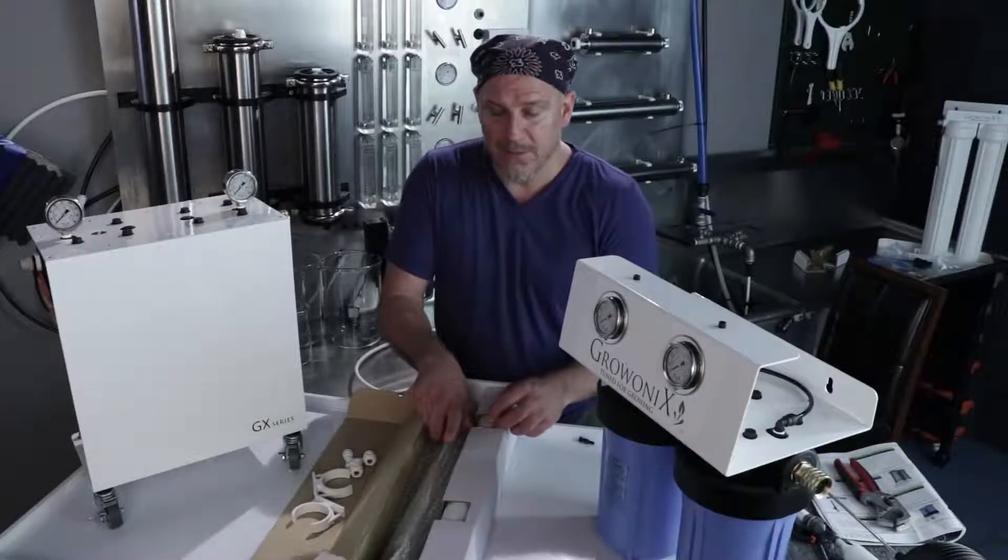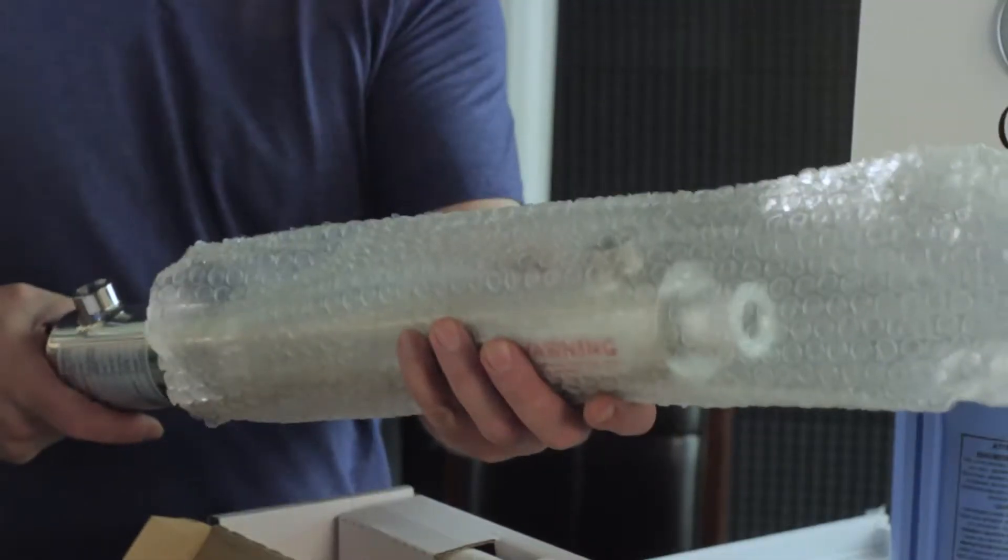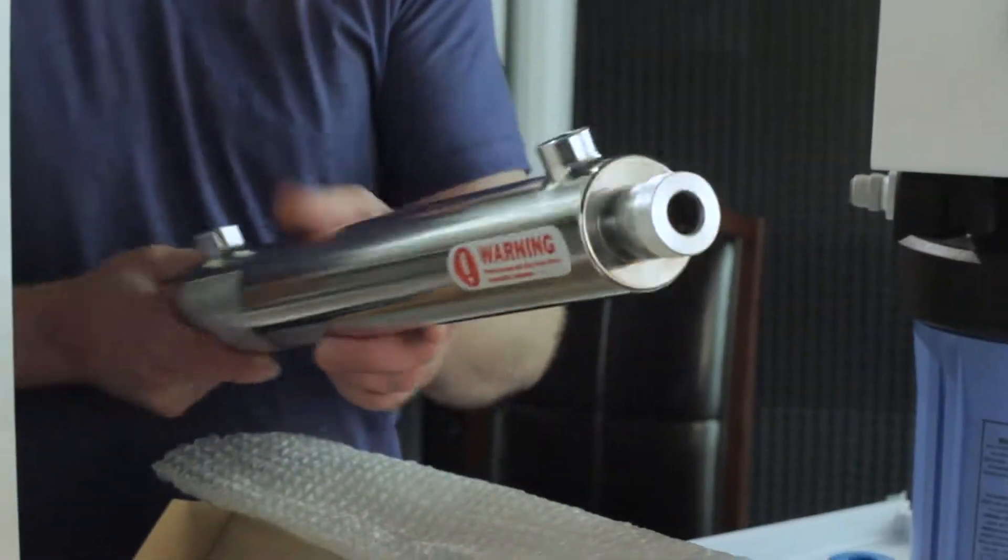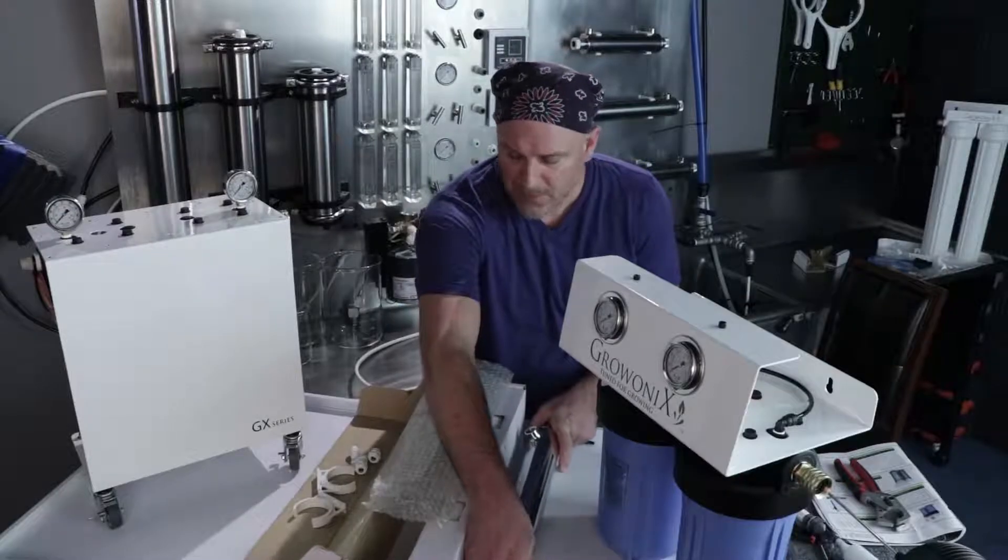UV filters get rid of 99.99% of microorganisms in a feed water supply and Grow Onyx UVs are stainless steel. So we're going to pull it out of the box.